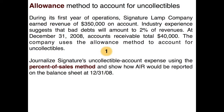During its first year of operations, Signature Lamp Company earned revenue of $350,000 on account. Industry experience suggests that bad debts will amount to 2% of revenues. At December 31st, accounts receivables totaled $40,000. The company uses the allowance method to account for uncollectibles, and we want to journalize Signature's uncollectible account expense using the percent of sales method and show how accounts receivable would be reported on the balance sheet.